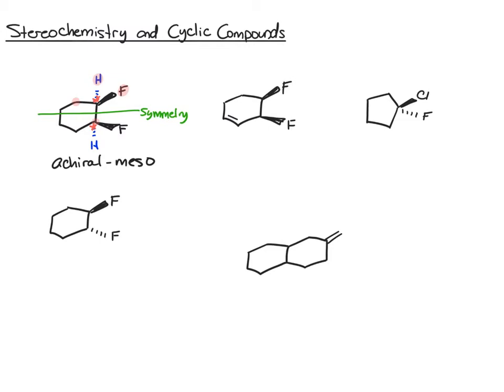Now let's compare that to the molecule below. The only difference in this one is that the bottom fluorine is back. You would still say that these carbons are chiral centers, but now if you try to draw a symmetry plane, one fluorine is above the plane and the other is below — they're not directly mirroring one another. For that reason there isn't a symmetry plane, and that means this molecule is chiral.